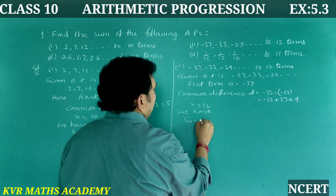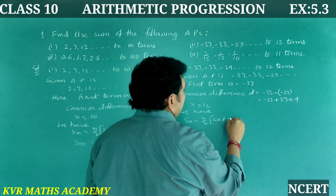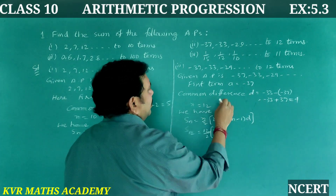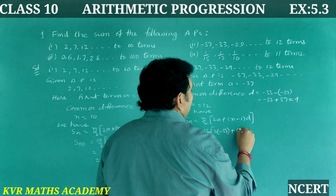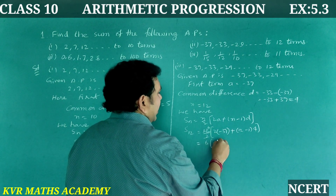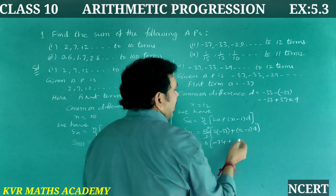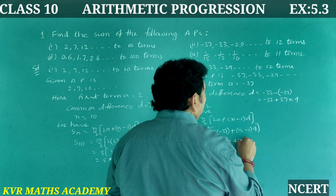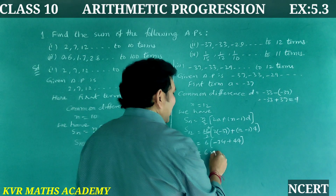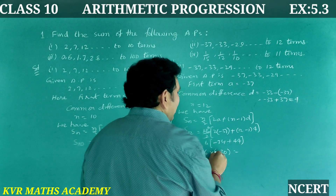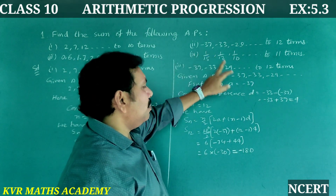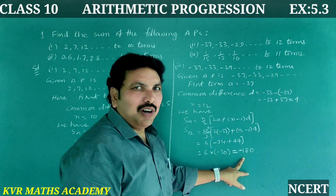Sₙ = n/2 × [2a + (n−1)d]. S₁₂ = 12/2 × [2×(−37) + (12−1)×4] = 6 × [−74 + 44] = 6 × (−30) = −180. So the sum of the first 12 terms of this AP is −180.